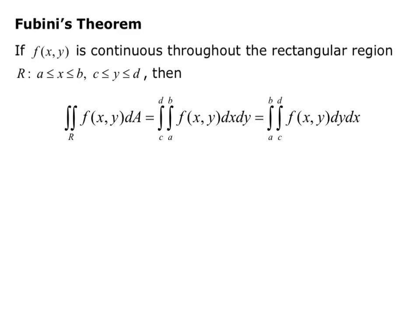Fubini's theorem says that if f is continuous throughout the rectangular region R, where x goes from a to b and y goes from c to d, then the double integral over R of f equals the integral from c to d of the integral from a to b of f dx dy — evaluating with respect to x first, then y. Fubini's theorem also tells us this equals the integral from a to b of the integral from c to d of f(x,y) dy dx.